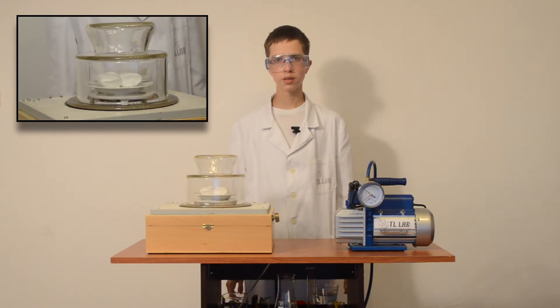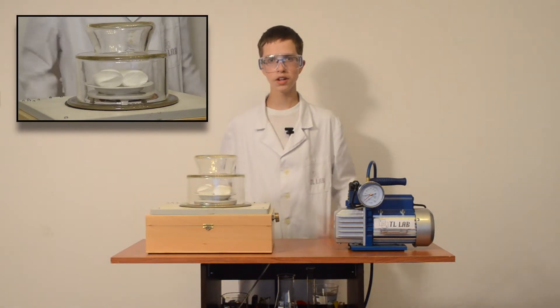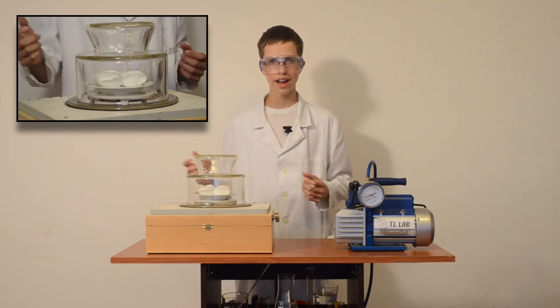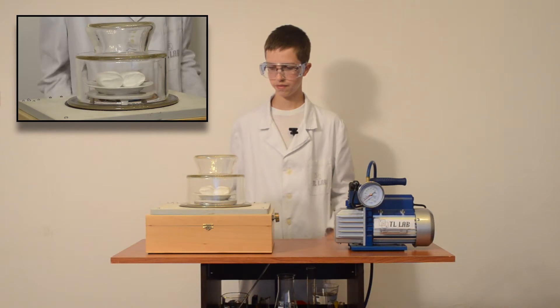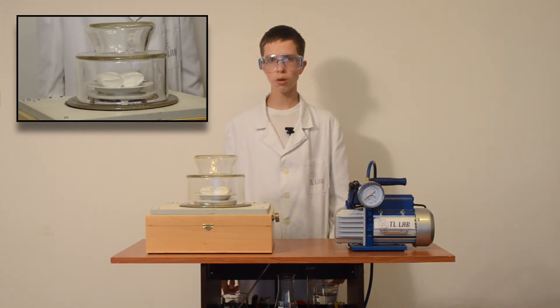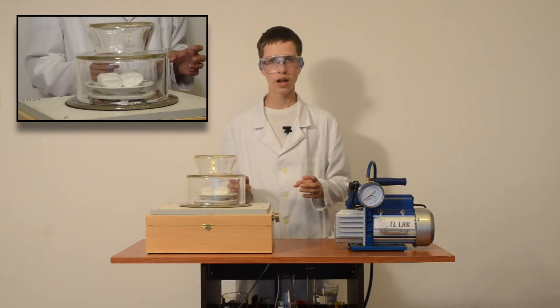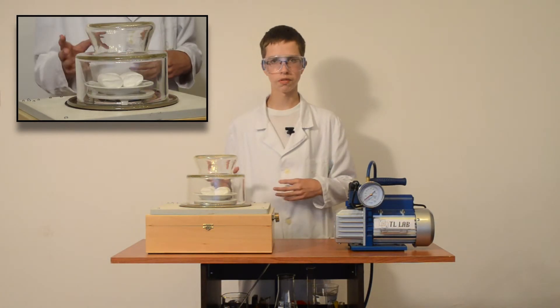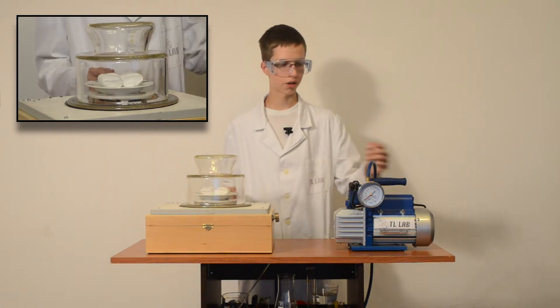We can see that marshmallows are growing. They are increasing their volume because of removing air from the vacuum chamber and decreasing air pressure. Now we can see marshmallows stopped growing because they reached their biggest possible volume when some air bubbles started to pop and air started to go out of them. Now we can get air in to see what will happen with the marshmallows.